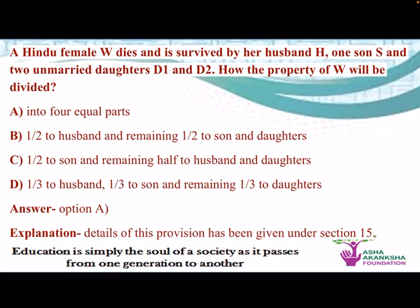A Hindu female W dies and is survived by her husband, one son and two unmarried daughters D1 and D2. How will the property of W be divided? Options: A. Into four equal parts. B. Half to husband and half remaining to son and daughters. C. Half to son and remaining half to husband and daughters. D. One-third to husband, one-third to son and remaining one-third to daughters. The correct answer is A, into four equal parts. You can refer to section 15 for more clarity.